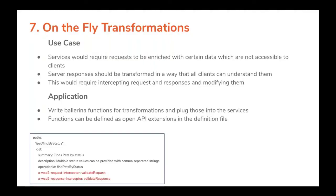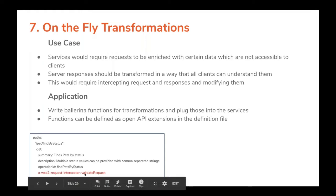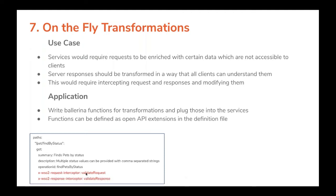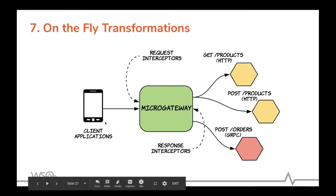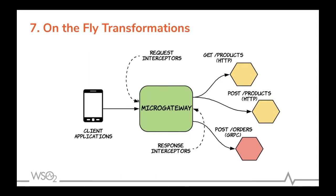Micro gateway 3.0 supports on-the-fly transformation. There may be requirements for request/response enrichment — converting JSON to XML or XML to JSON, adding additional headers, or header manipulation. These scenarios can be achieved through interceptors defined in the OpenAPI definitions, written by the API developer in the Ballerina language. Request interceptors are invoked before dispatching the request to the backend, and response interceptors are invoked before sending the response back to the client.